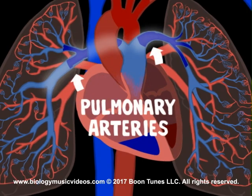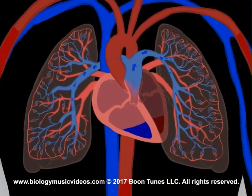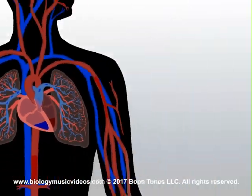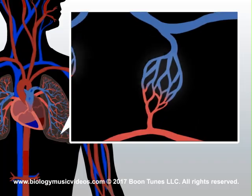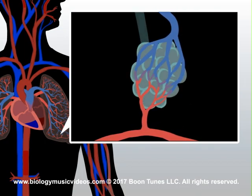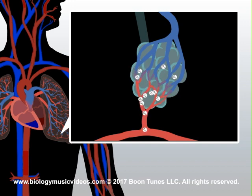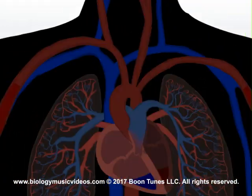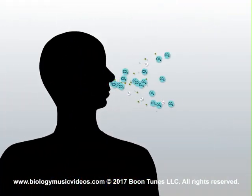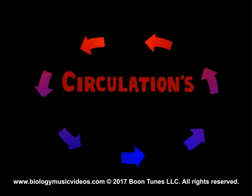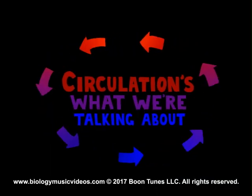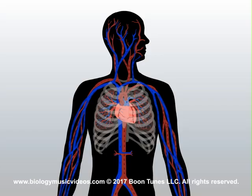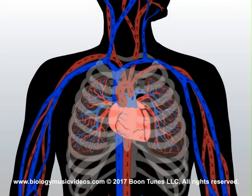The pulmonary trunk splits and becomes the pulmonary arteries of the lungs. The blood flows through these arteries, then arterioles, then capillaries, which surround air sacs filled with oxygen from the air we breathe. The oxygen moves into the capillaries; CO2 moves out simultaneously. It gets exhaled as we breathe out through the nose or through the mouth. Circulation's what we're talkin' about — blood flows to the heart which pumps it out. Hear the heart rhythmically pulsate, forcing the blood to circulate.